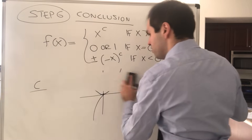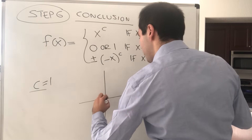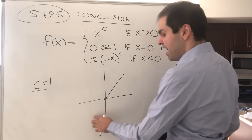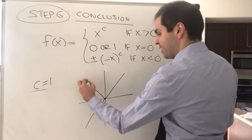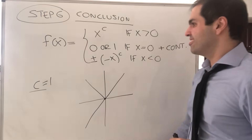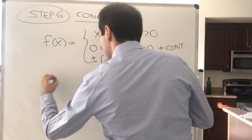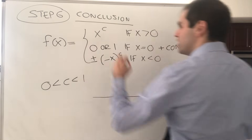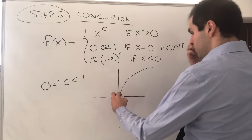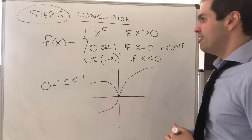For c equals 1 and x positive it's just x; at 0 it's forced to be 0. For negative x it's either x or minus x — and notice that choosing minus x gives us the absolute value function. That's another solution. For c between 0 and 1 it looks like a square root function, forced to 0 at 0, and for negative x you get either the square root of (−x) or its negative.